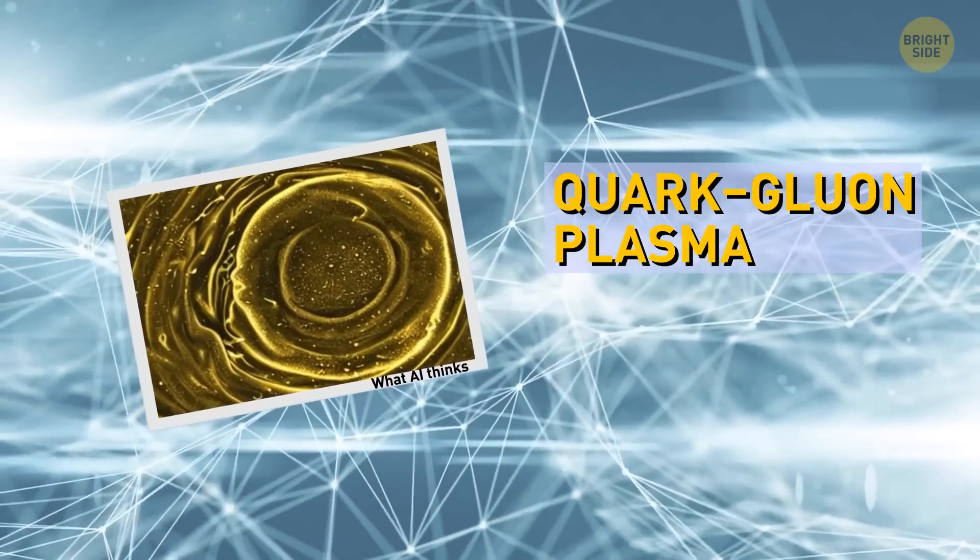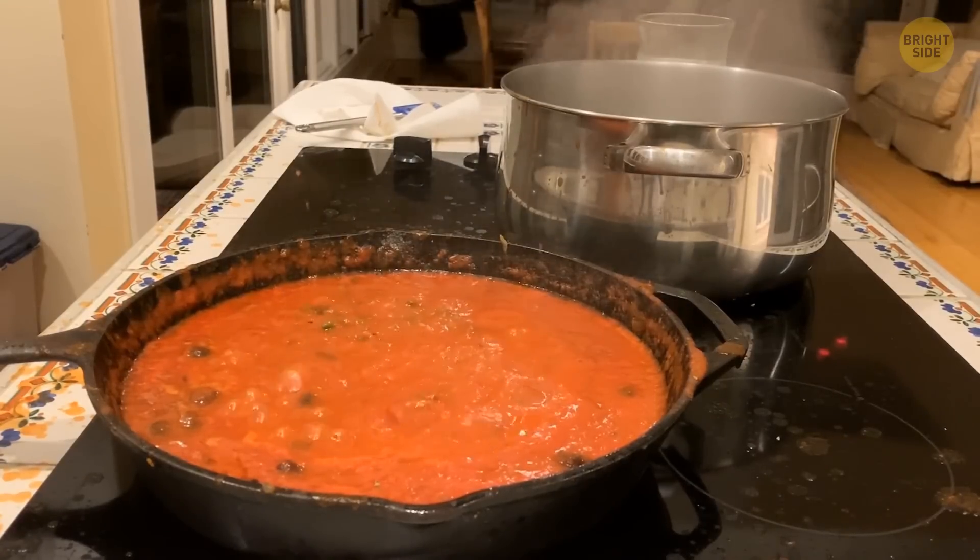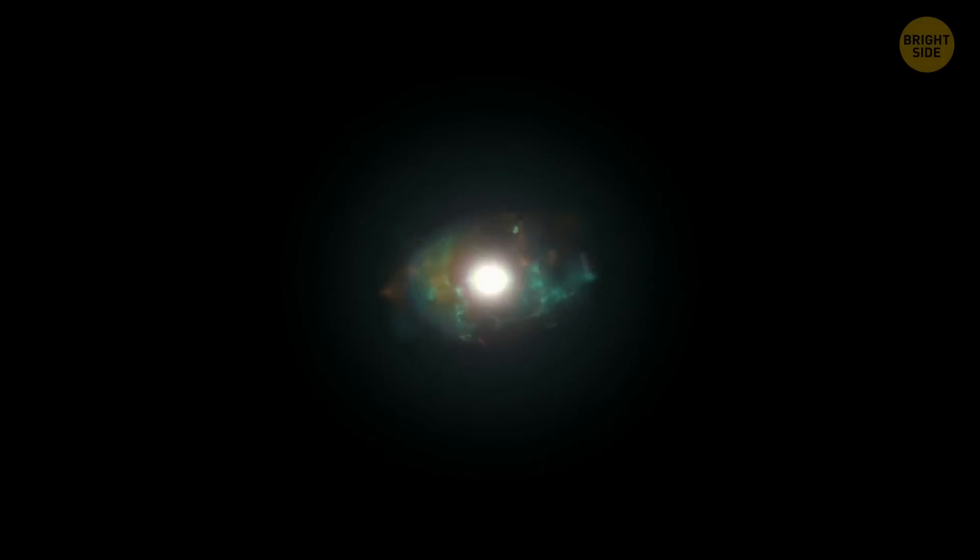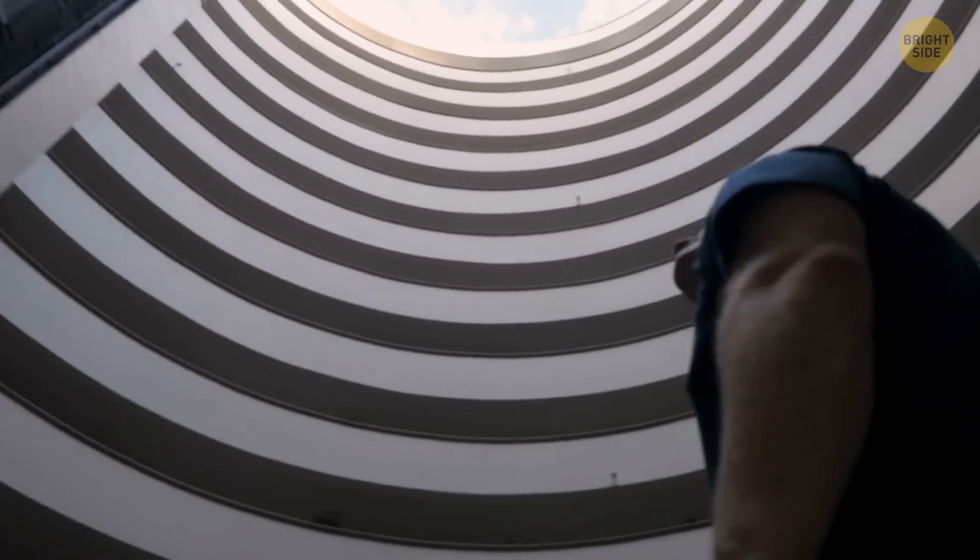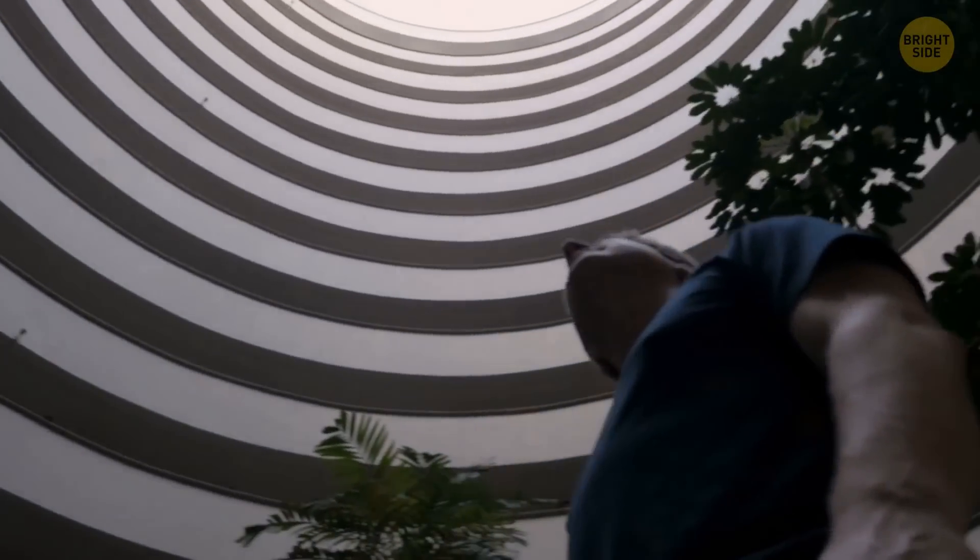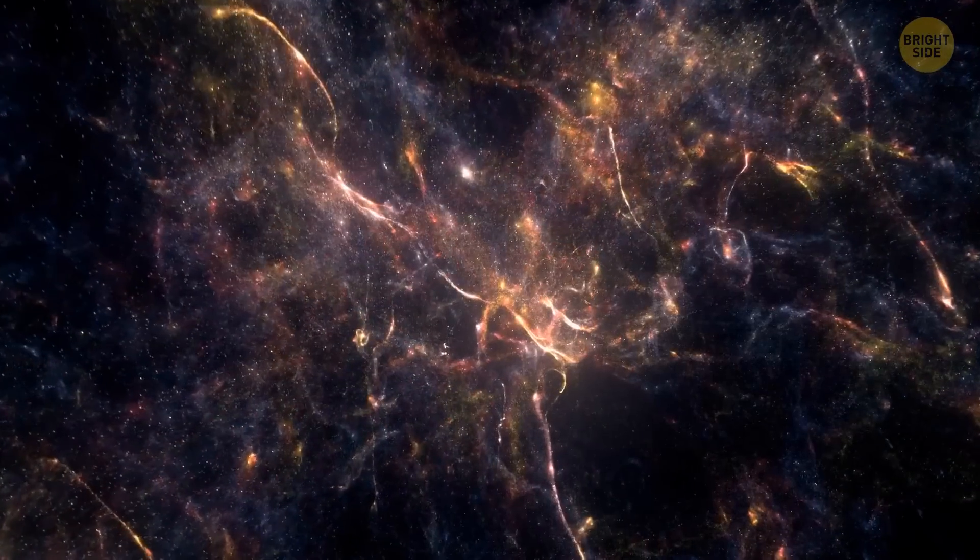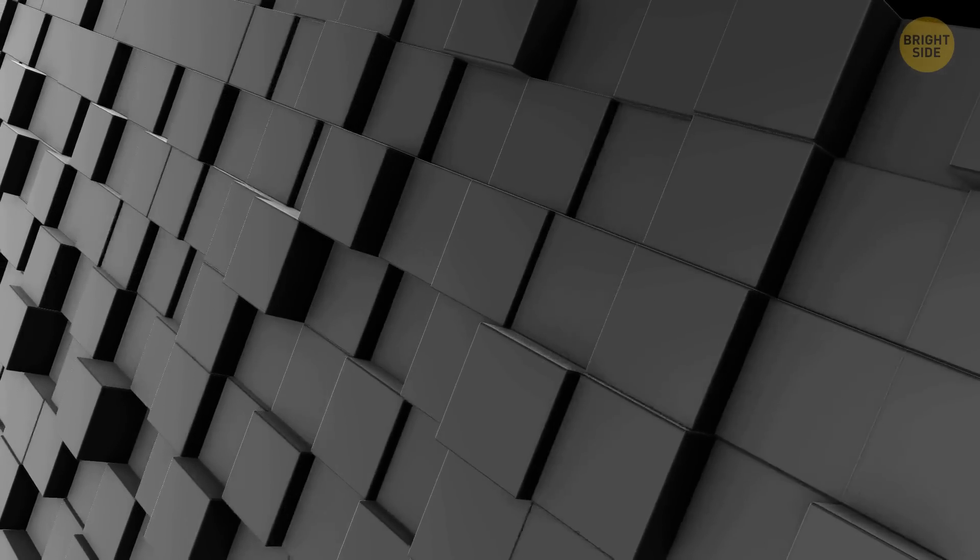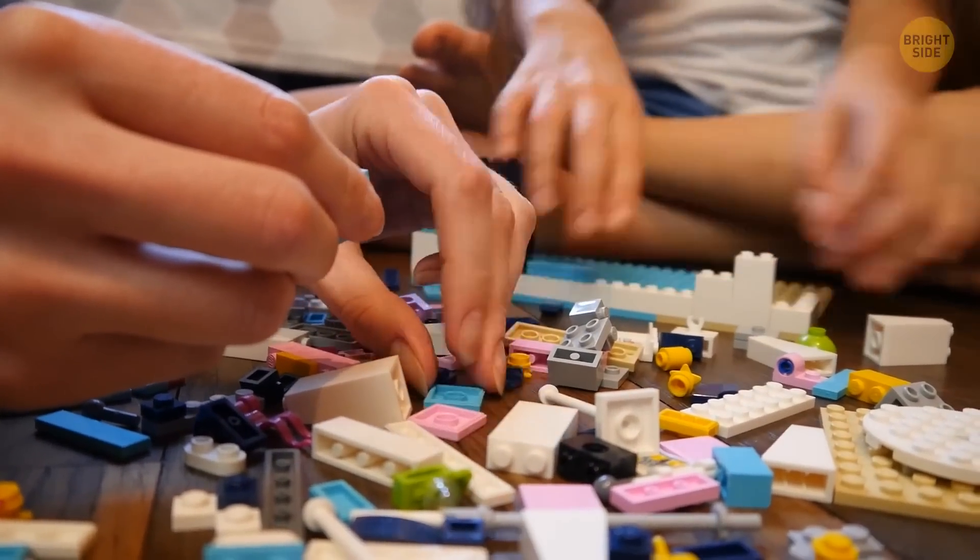First, we have quark-gluon plasma. This state of matter looks like a hot and soupy mess. It's a bizarre state that existed just moments after the Big Bang, when the universe was incredibly hot and dense. You see, inside all the things around us, there are tiny particles called quarks. And as far as we know, they're the smallest particles of the universe. They're the building blocks of our world. Just like Lego bricks, they come in different types and can stick together to form bigger structures.